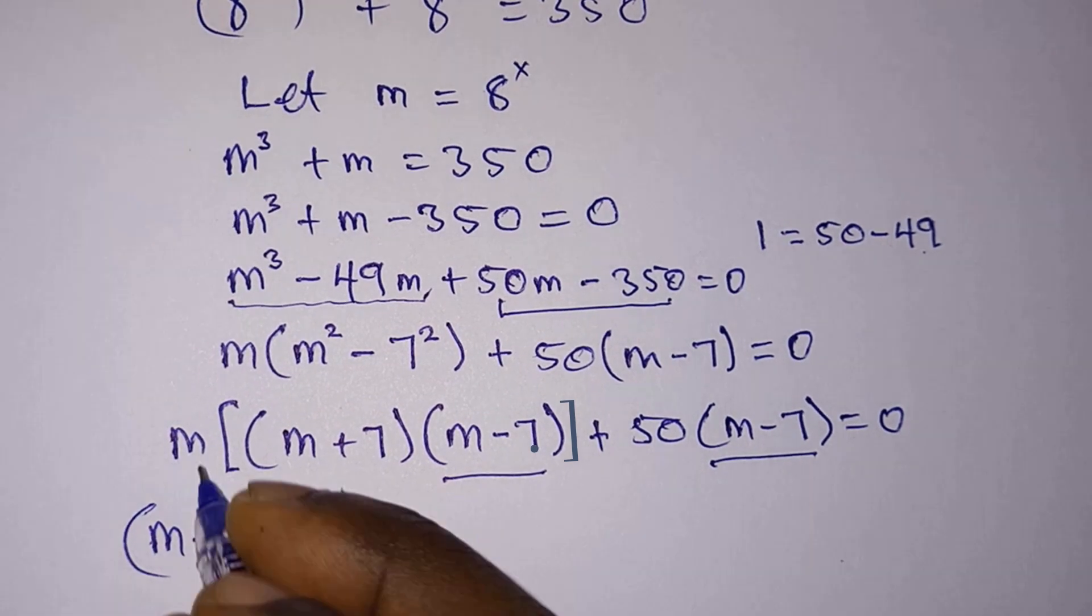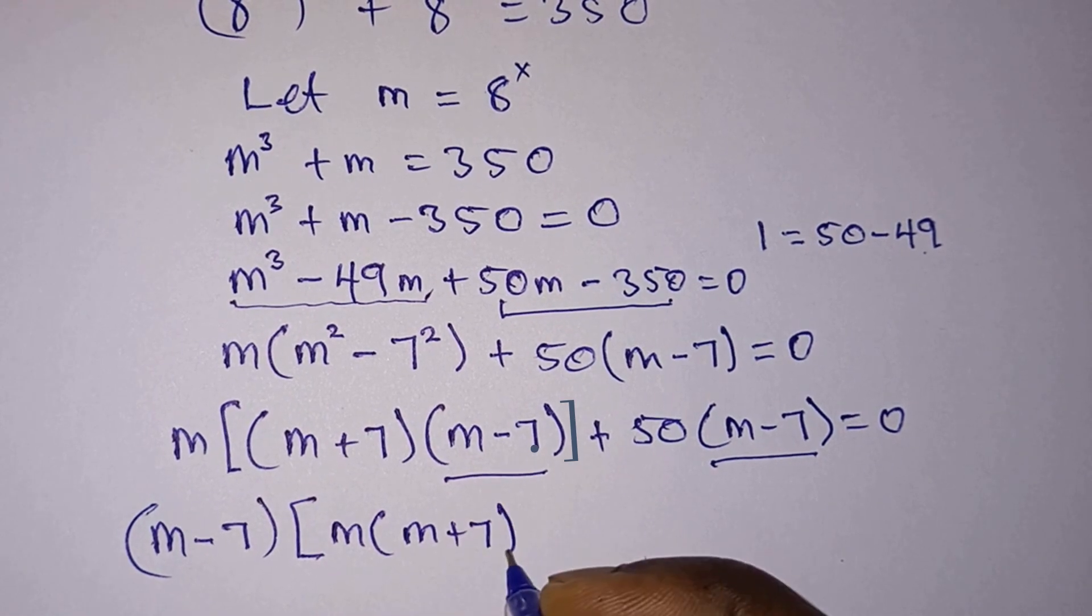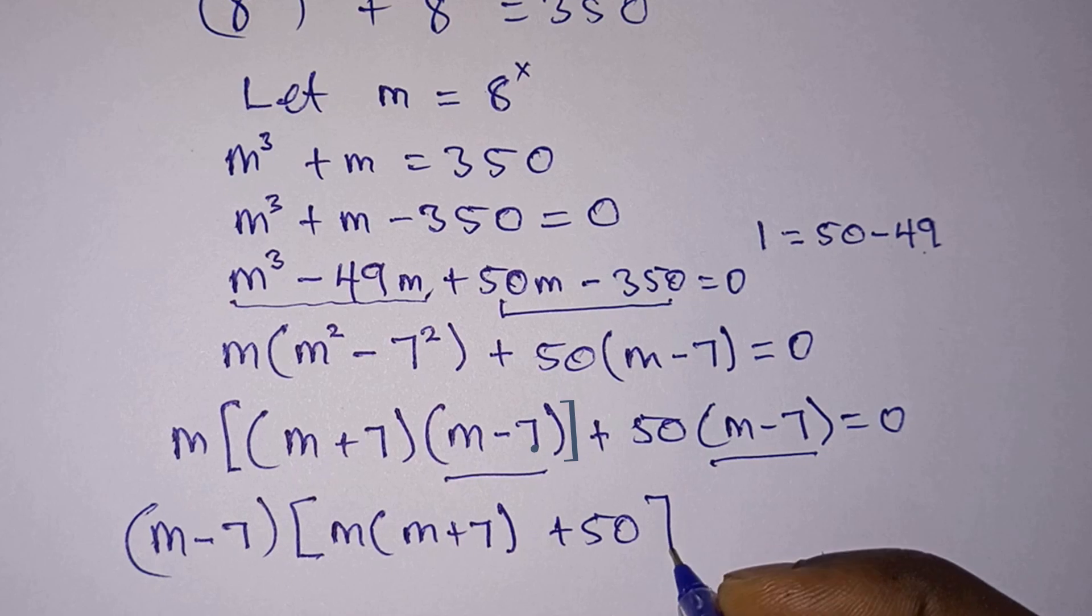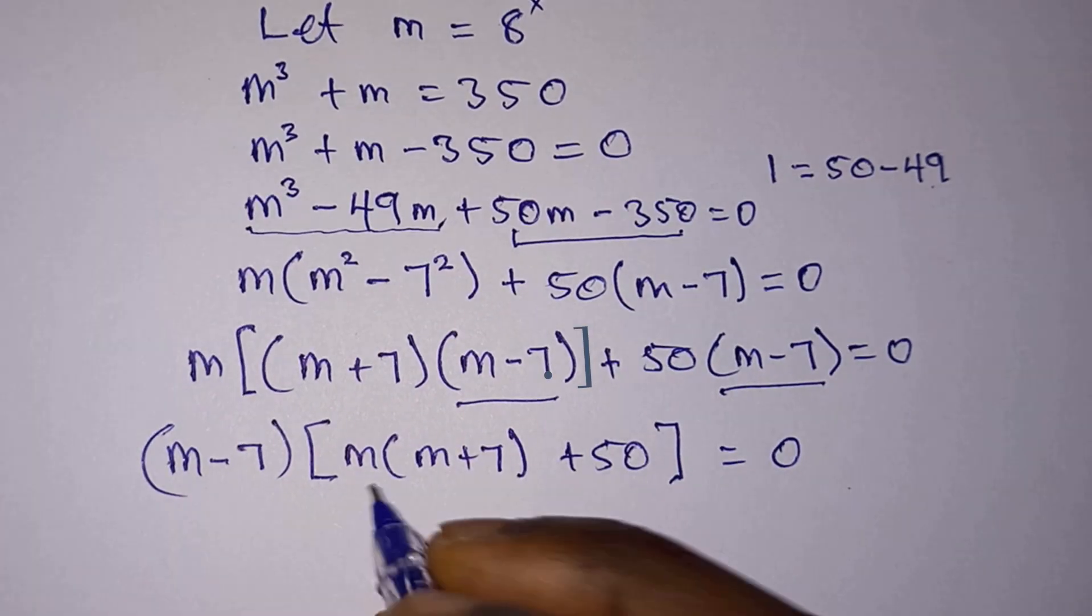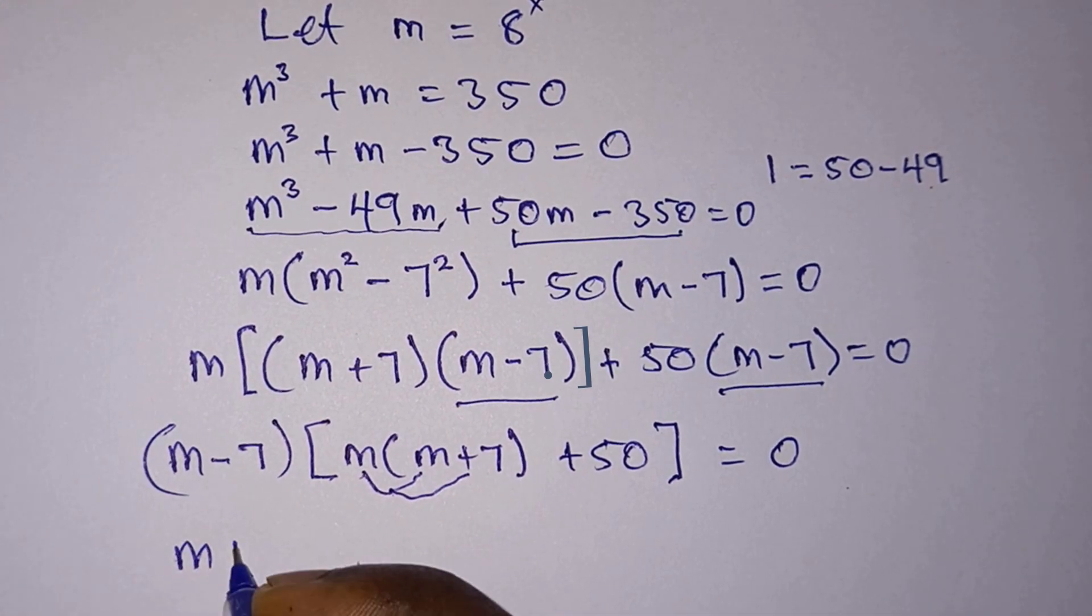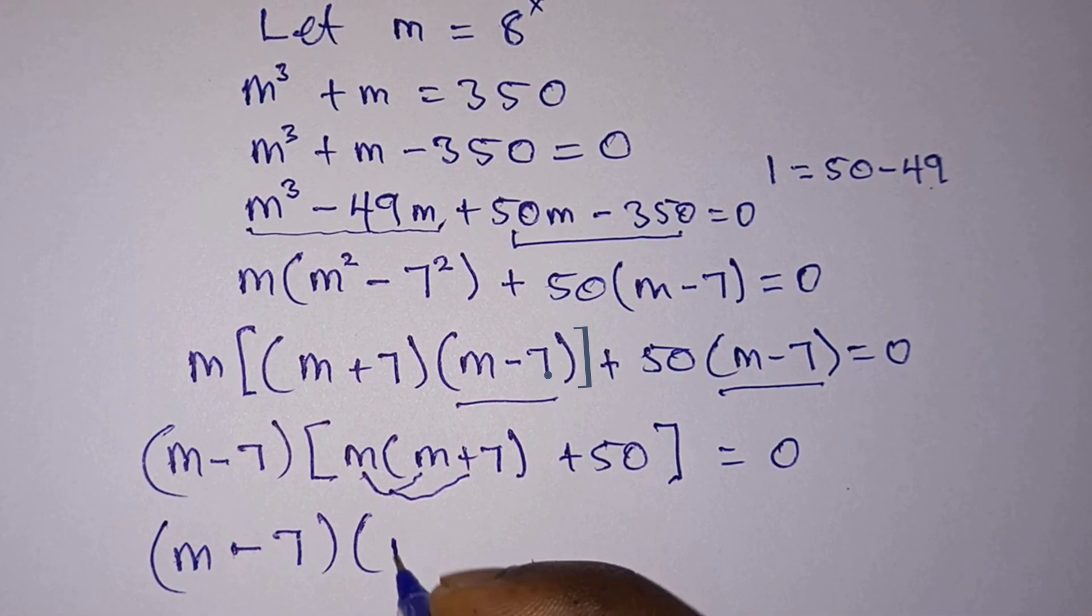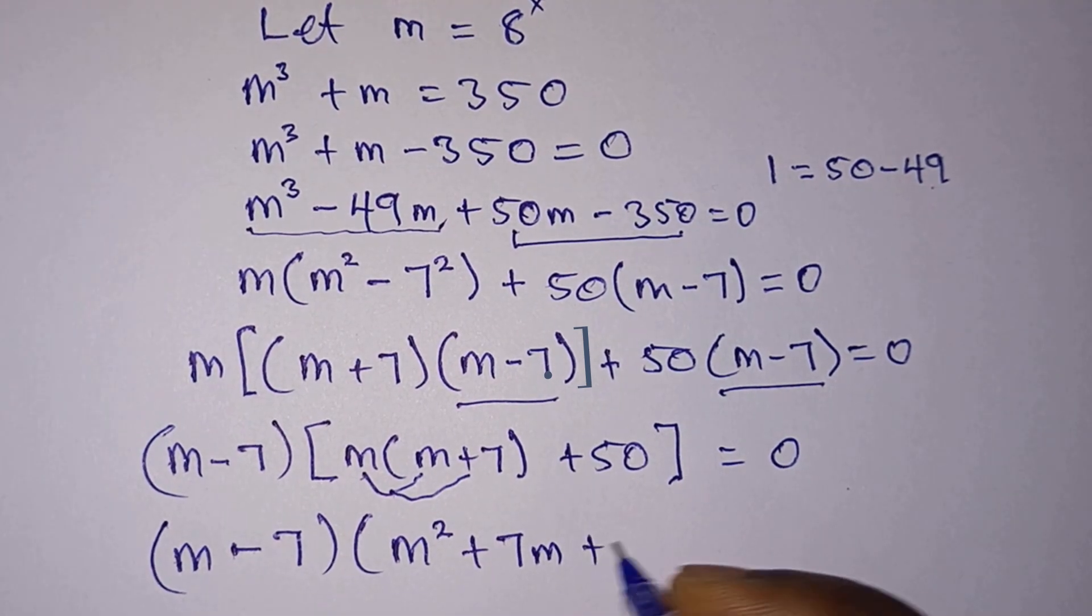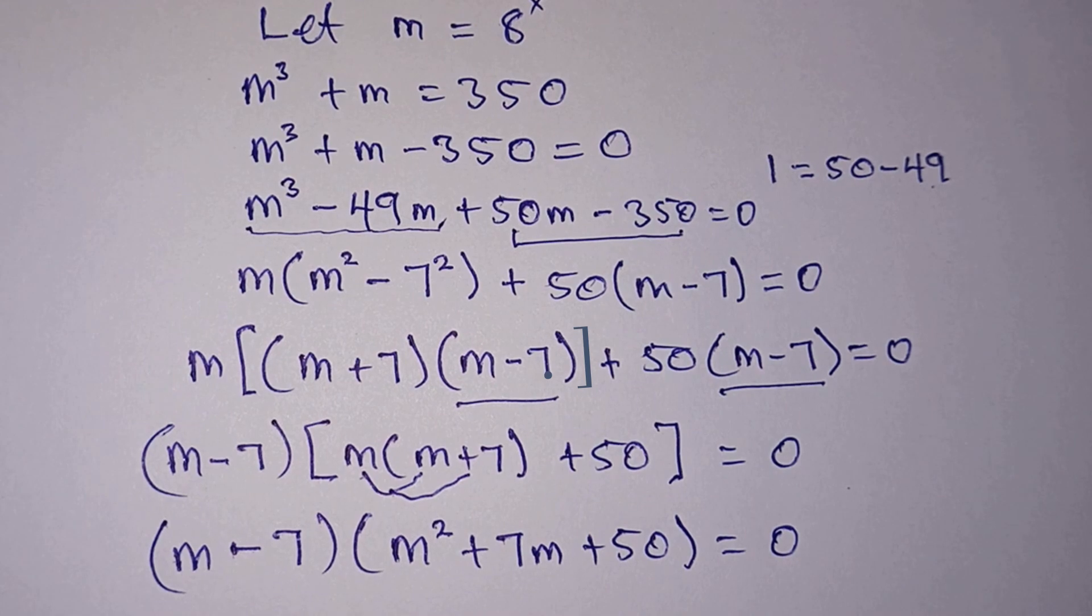m times m plus 7, then this side we are left with 50, and this is equal to 0. Now let's distribute this m across, so we have m minus 7 times m squared plus 7m plus 50, and this is equal to 0.